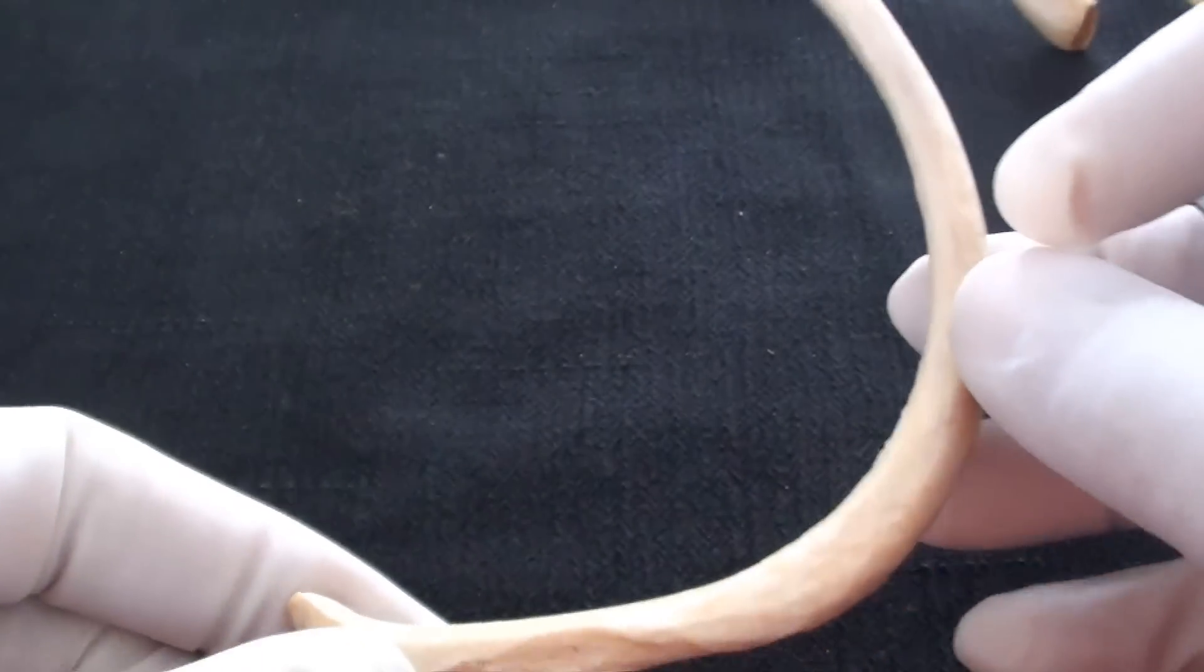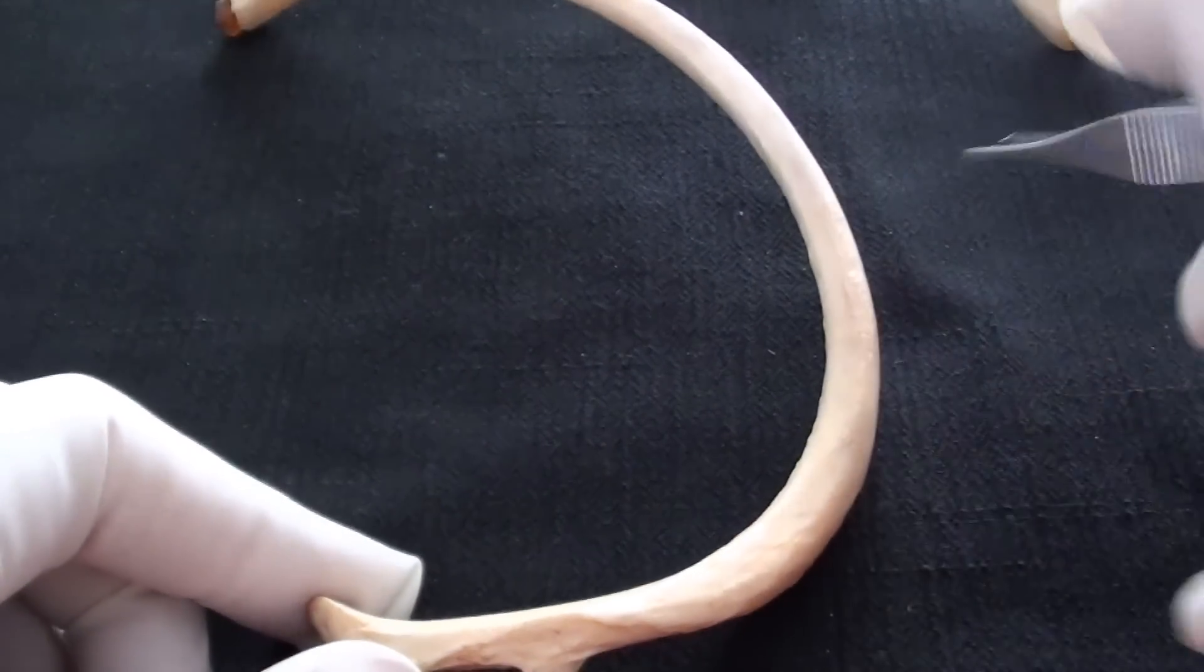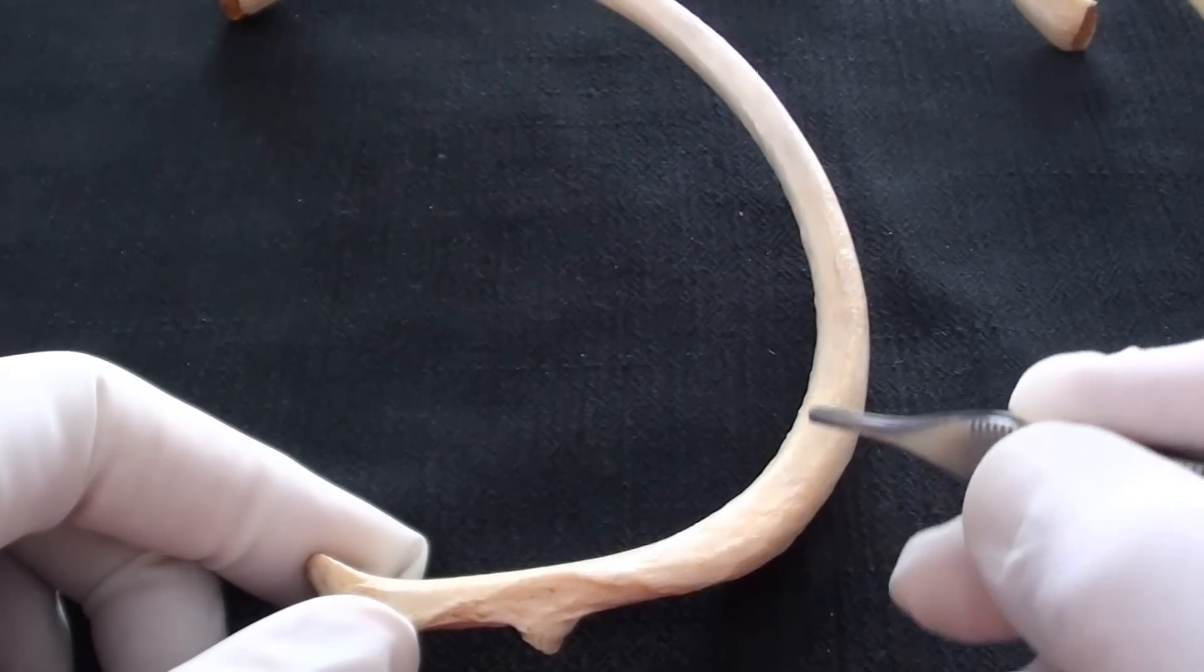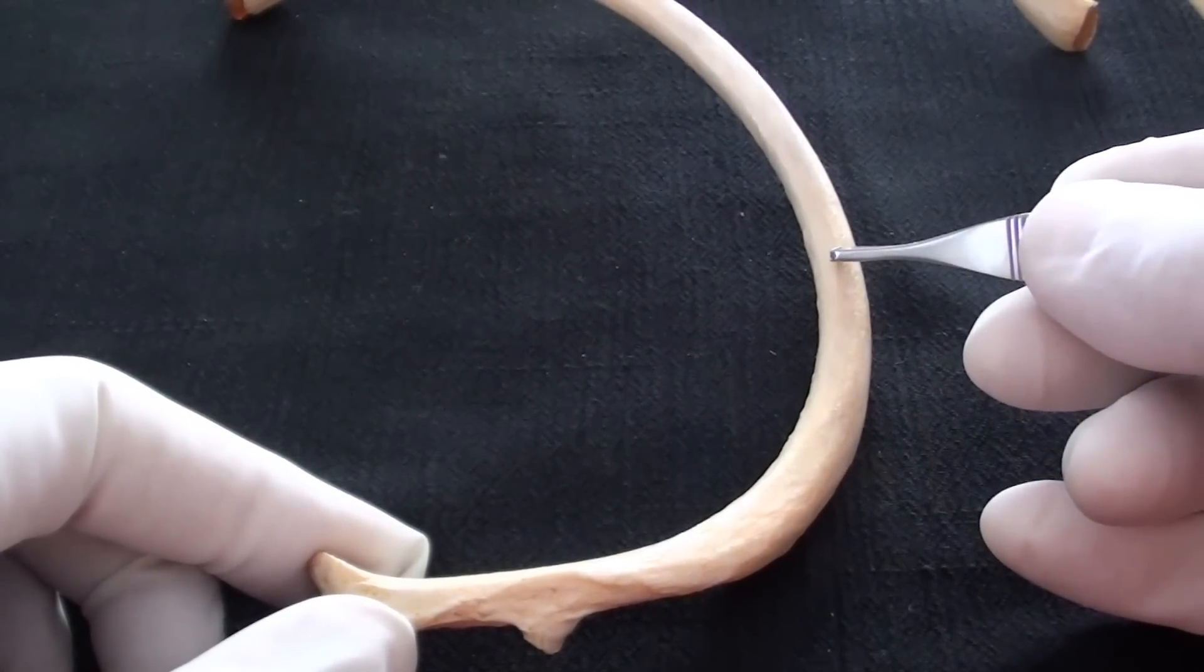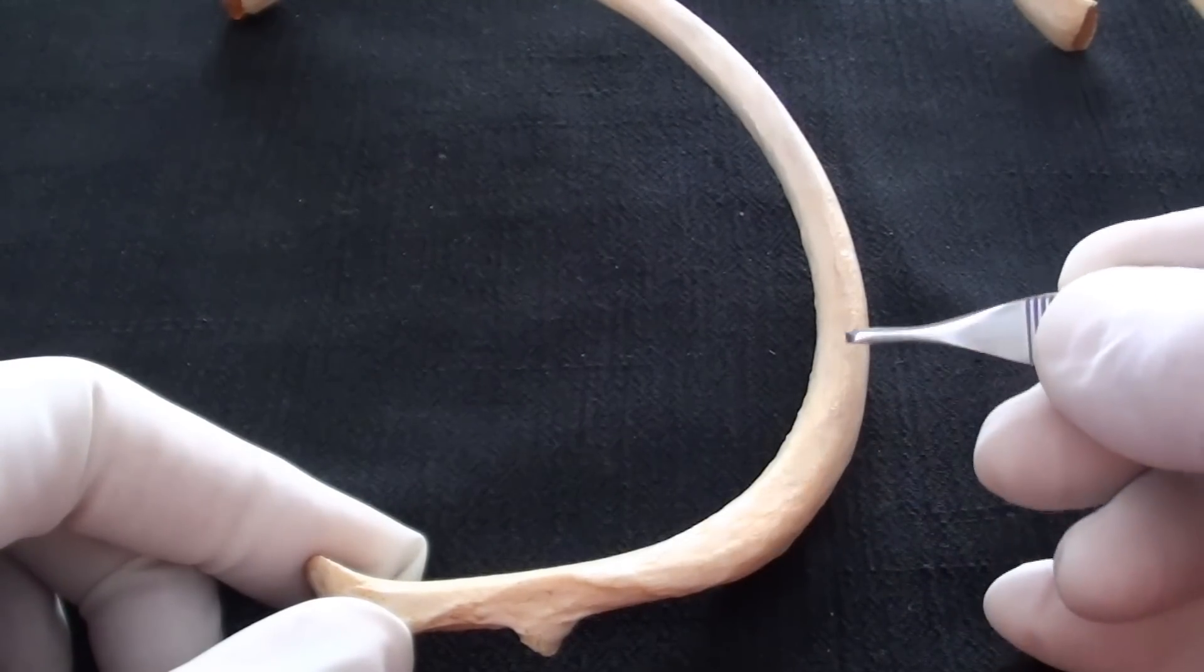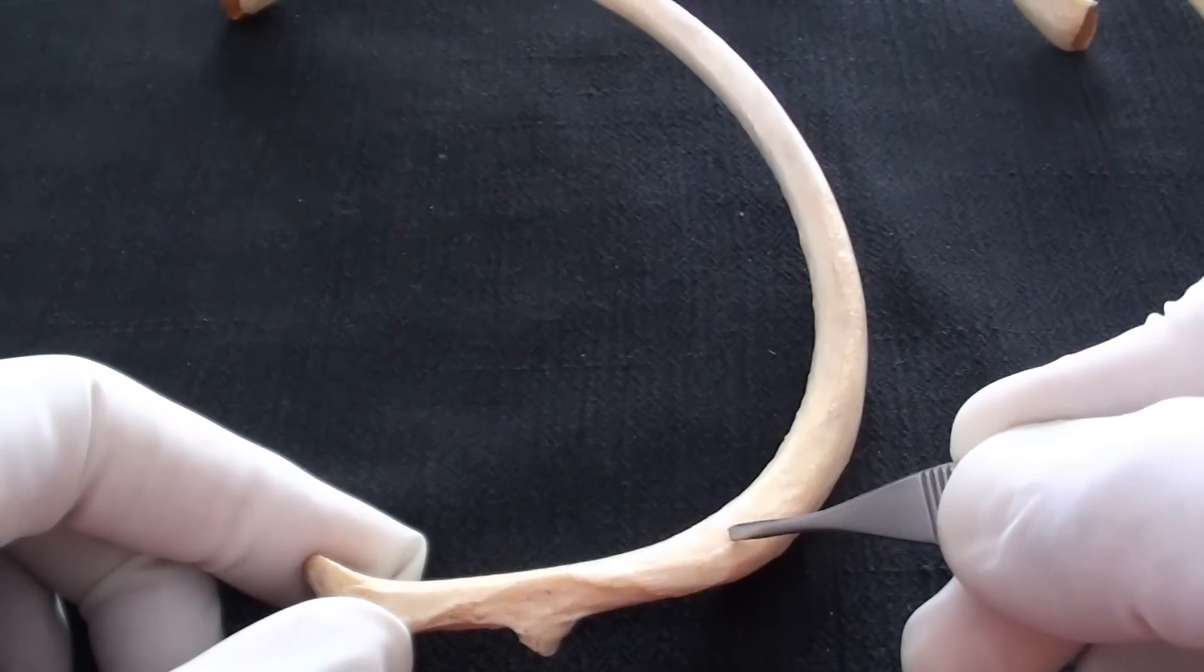Past the tubercle, we are finding the area where the rib changes its curvature the most. This area approximately from here to here is what we refer to as the angle of a rib.